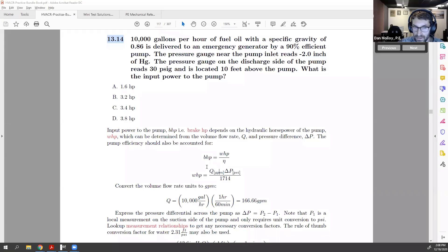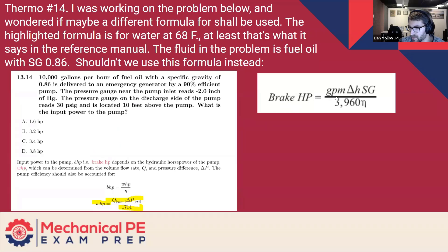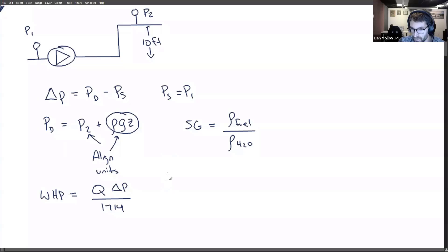If on the other hand, you want to use the other formula, which you're certainly is not wrong, then you have to account for the specific gravity. So that other formula, and I think the other formula that he showed went straight to BHP. So this is also valid. The only difference between BHP and WHP is that the efficiency is included. So I could just as, it'd be just as correct to say WHP equals GPM delta H SG over 3960 and exclude the efficiency.